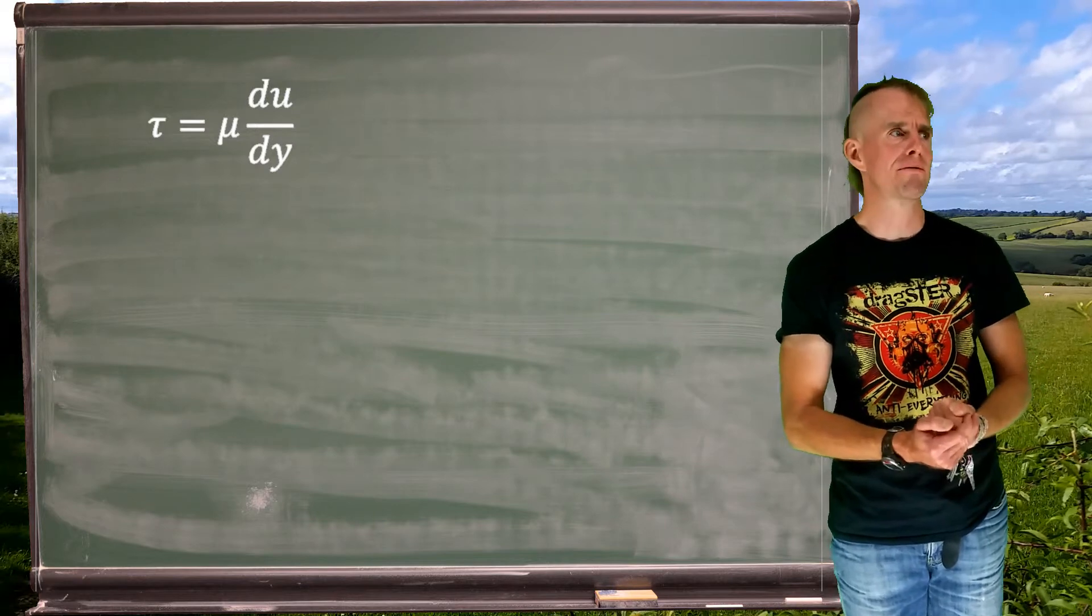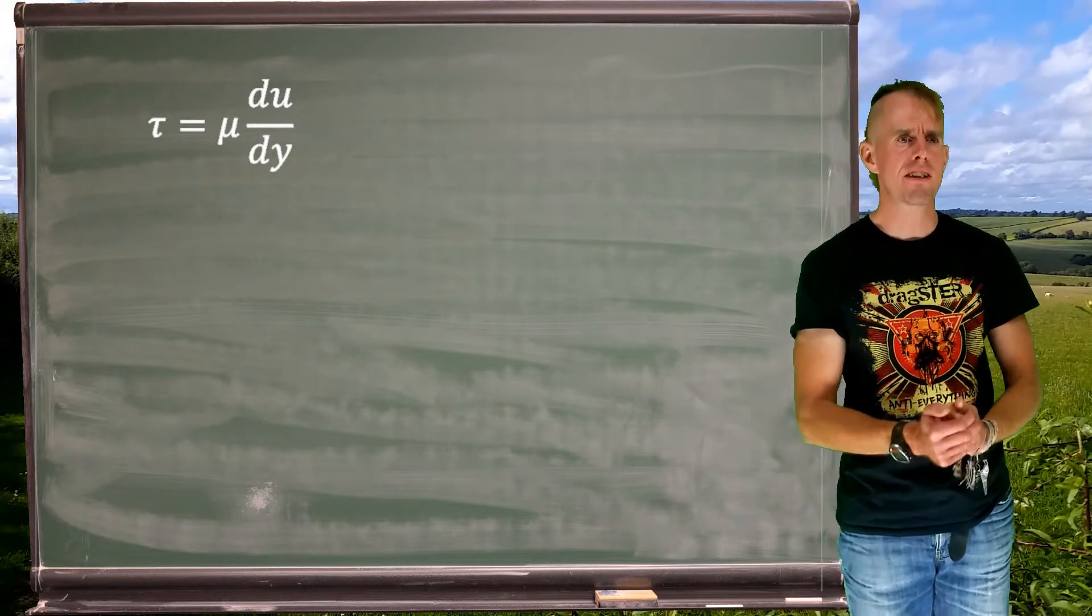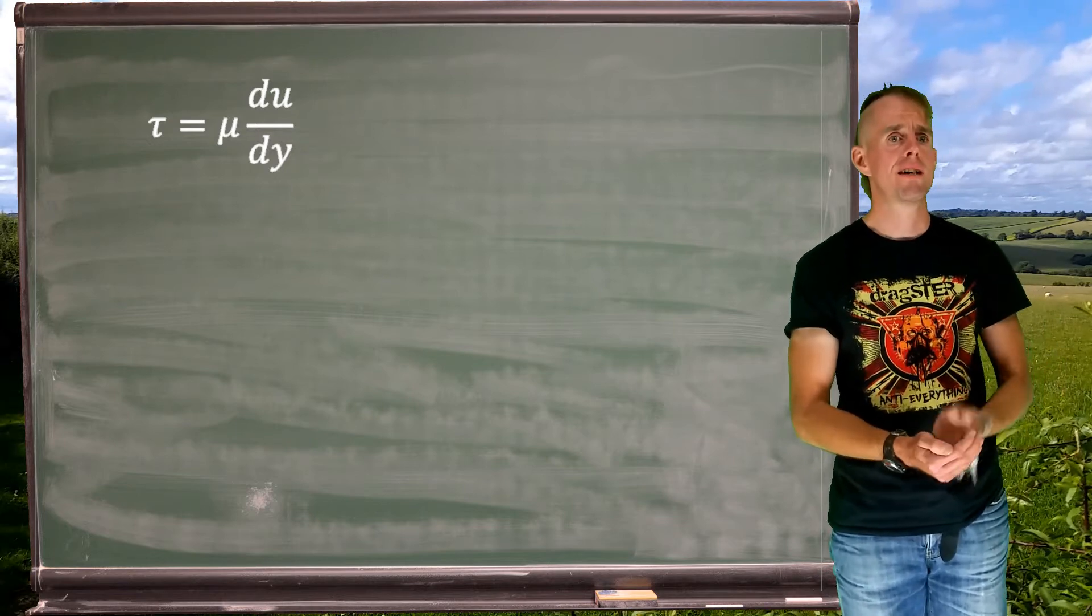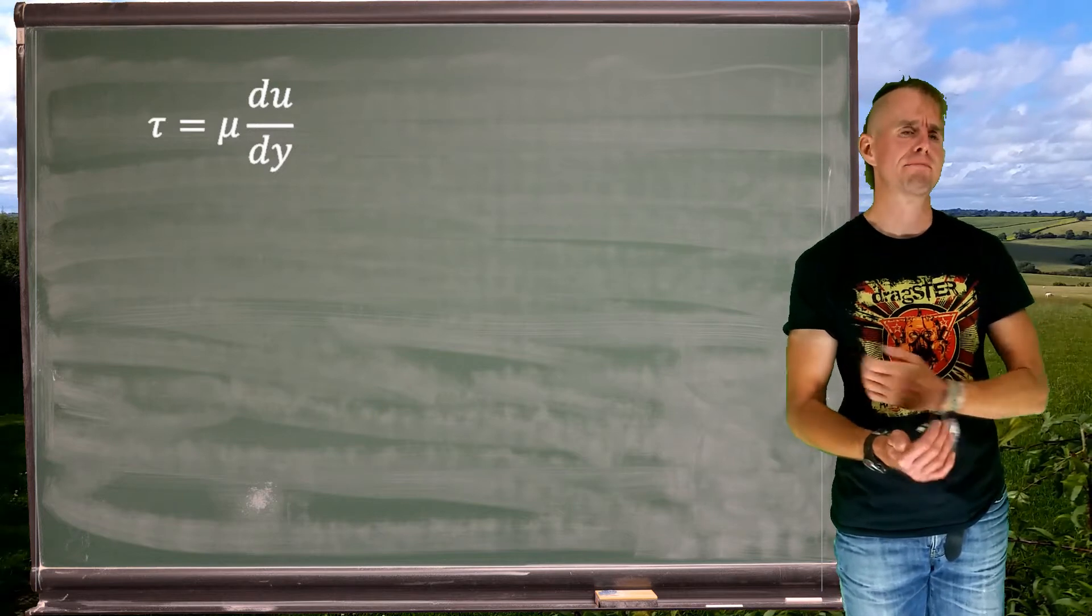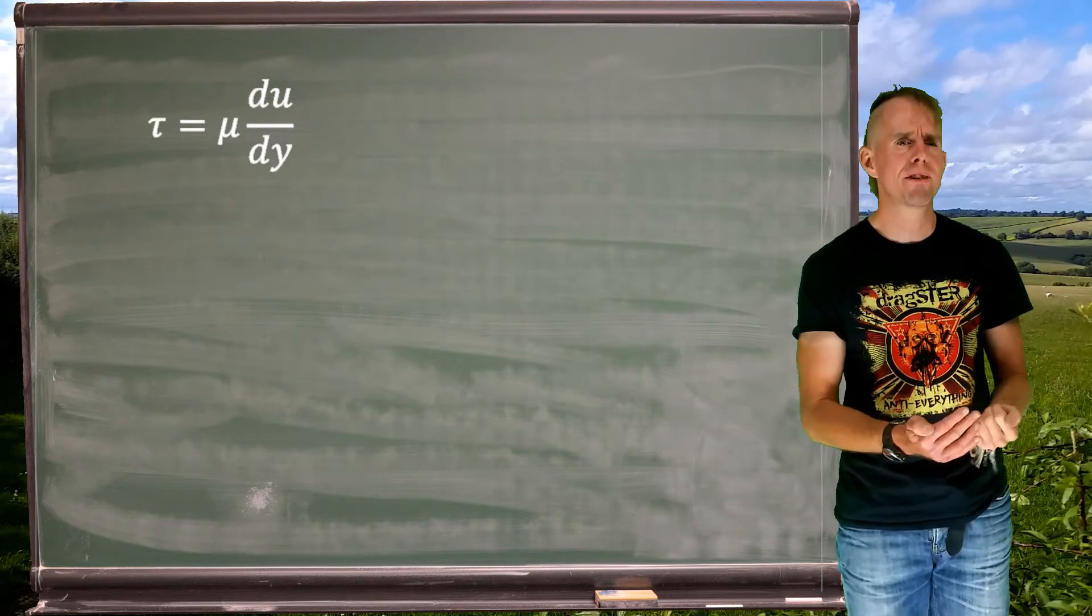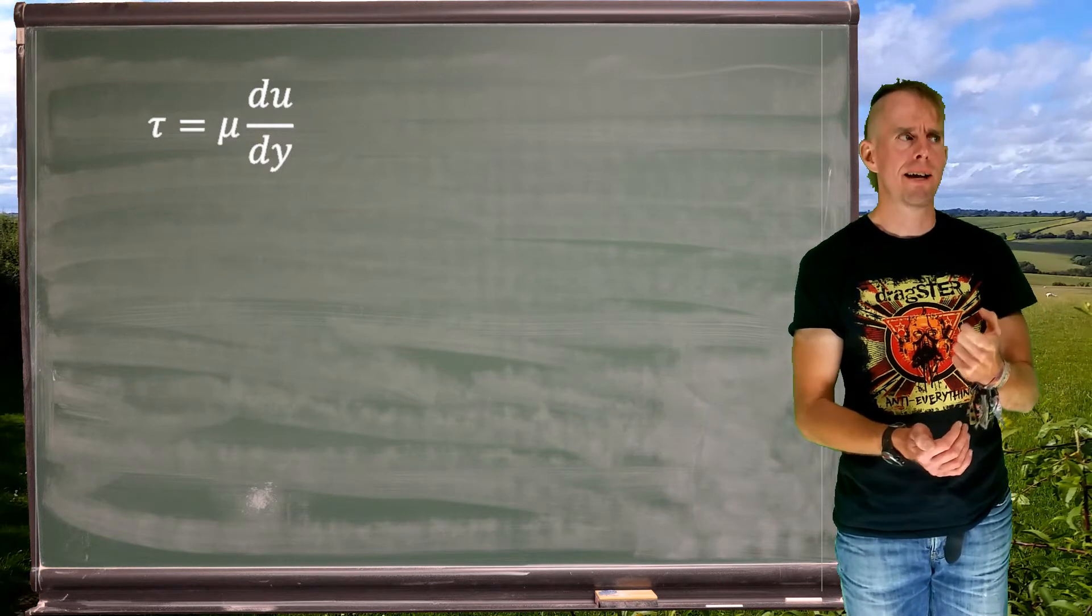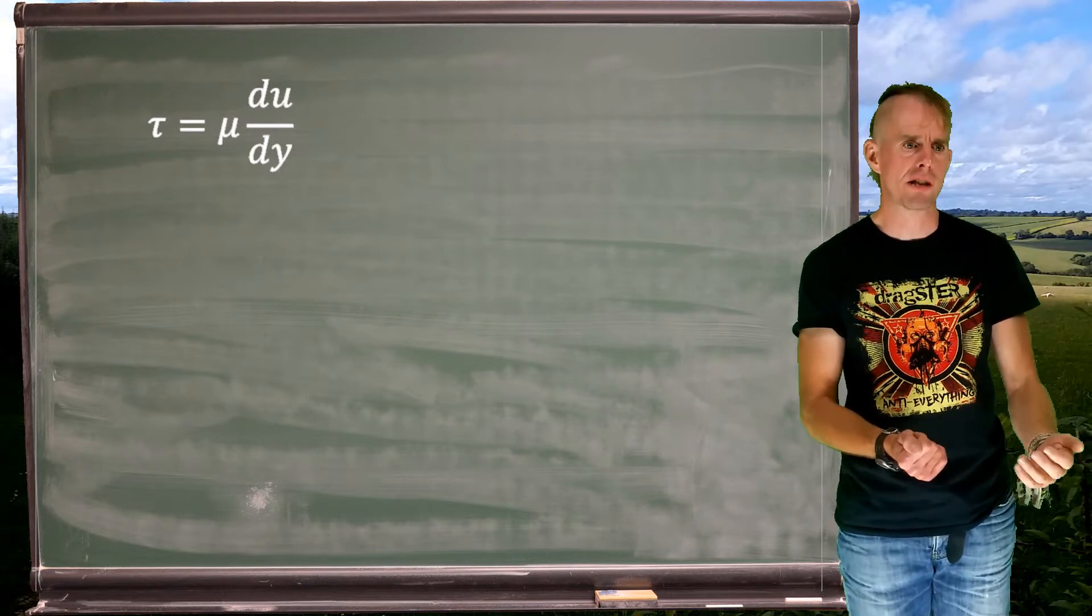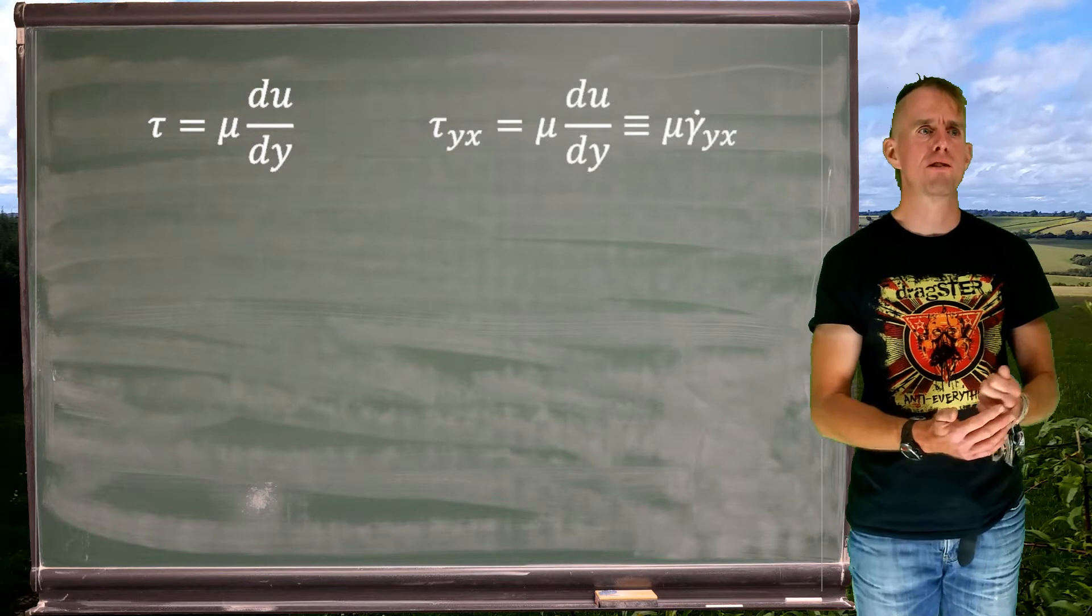So on the blackboard, I've written down the Newtonian constitutive equation in one dimension. Tau, shear stress, is equal to mu, fluid viscosity, times du by dy, a velocity gradient. Now, we've seen that stress, tau, is actually a tensor quantity, and that each element therefore has to be correctly identified in terms of face and direction. So let's be a little bit more precise and let's write this down as we should, knowing that the element tau comes from a tensor.